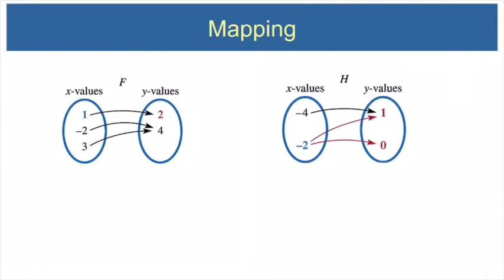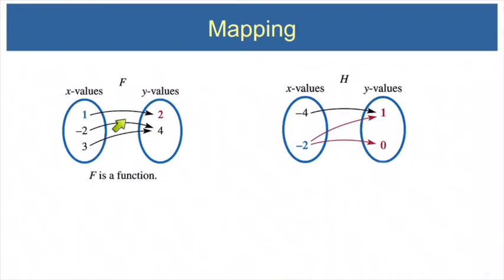Now here is just an alternate way of representing a relation. Instead of listing the ordered pairs, sometimes you'll see the x values in one circle and the y values in another circle, and you'll see an arrow drawn from each x value to the y values that it matches. So let's think about whether f would be a function. The x value of 1 matches only a y value of 2, negative 2 matches only 4, and the x value 3 matches a 4, but only one number. So again, f is a function. And then here we have function h — notice that negative 2 matches two different y values, so this is not a function.